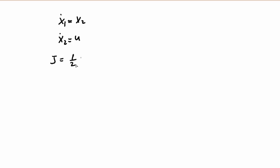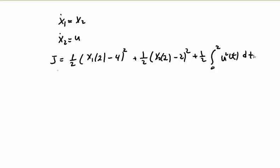We have the performance index J given in the problem: half [x1(TF) - 4]² plus half [x2(TF) - 2]² plus half integration from 0 to 2, the initial time to final time, of our control input u(t)² dt. This is our performance index, our cost function.